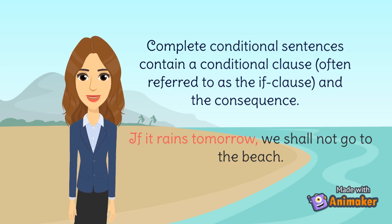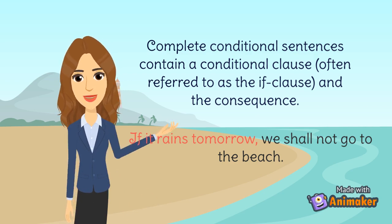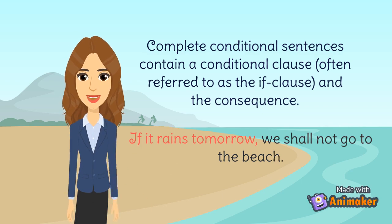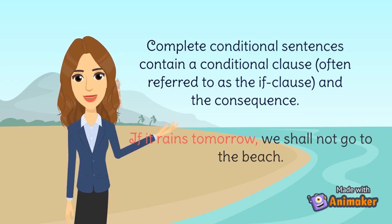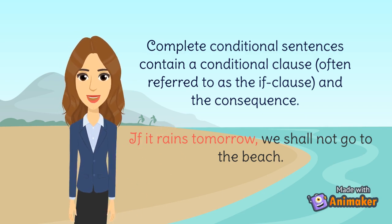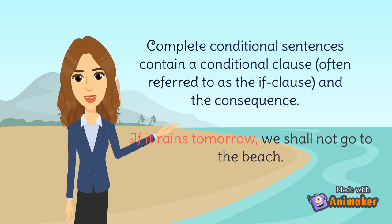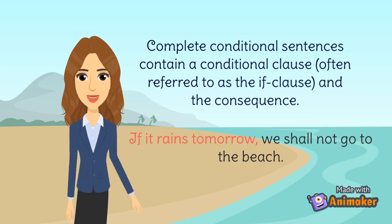For example, if it rains tomorrow, we shall not go to the beach. In this example, the clause 'we shall not go to the beach' is the consequence of the conditional clause 'if it rains tomorrow'.